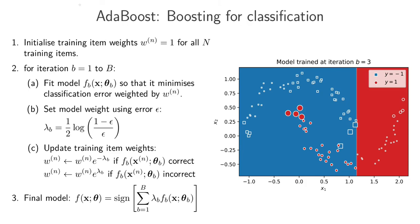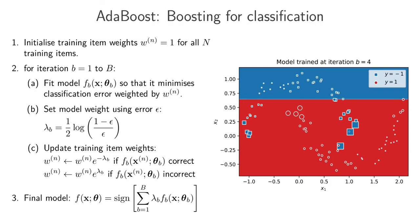The third classifier in iteration B equals 3 will really care about those three heavily weighted points. This is the output from the third classifier — you can see it gets those three points right, which was important, but now it's making mistakes on other points. This process repeats: every time you train a new decision tree stub, you check which points you're messing up from your history of previous classifiers and try to get them right.